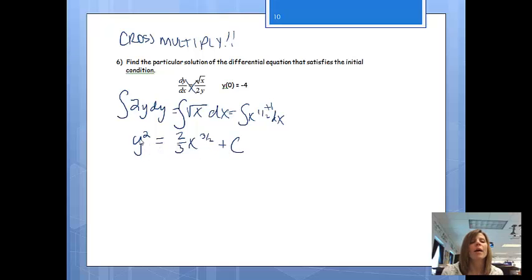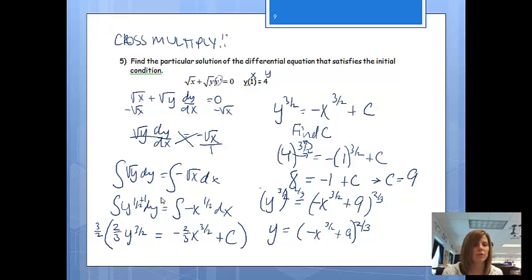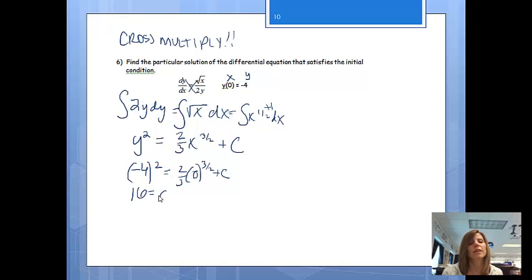And before I solve all the way for c, usually it's easier to find c at this point before we take the square root of both sides. So from here, again, when x is 0, y is negative 4. So negative 4 squared is equal to 2 thirds times 0 to the 3 halves plus c, which gives me 16 is equal to c. So from here, we're going to now plug that in. I'm going to have y squared is equal to 2 thirds x to the 3 halves plus 16.